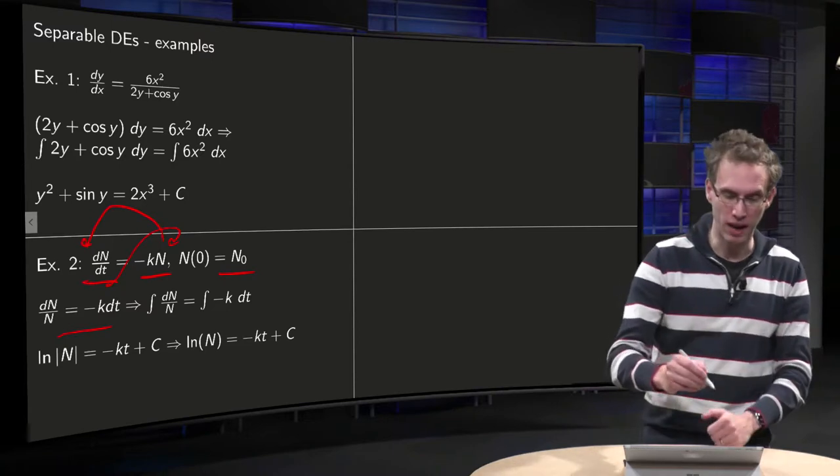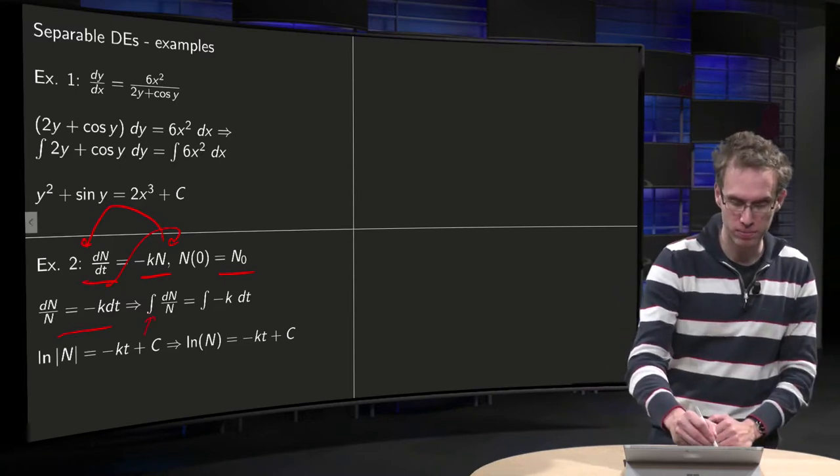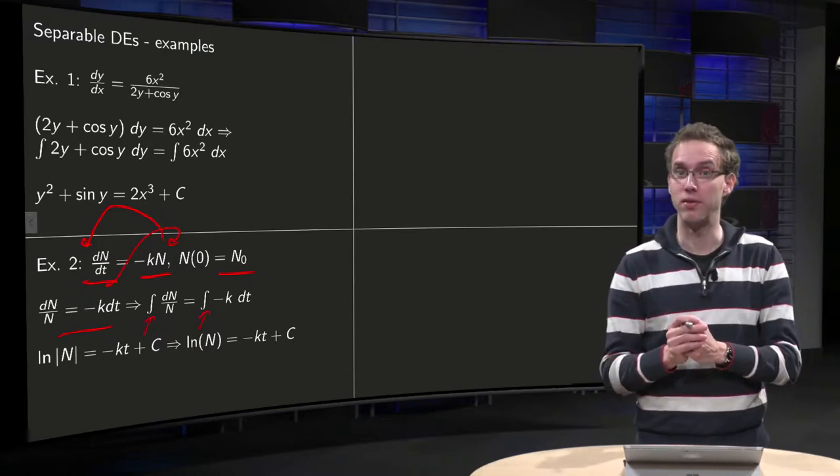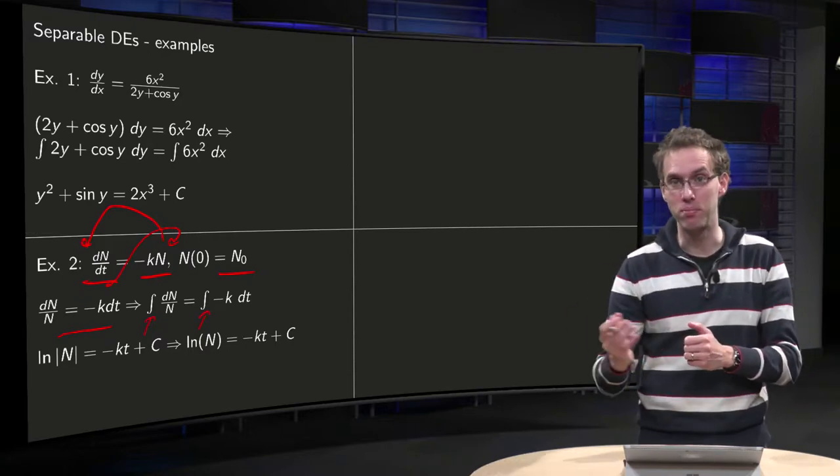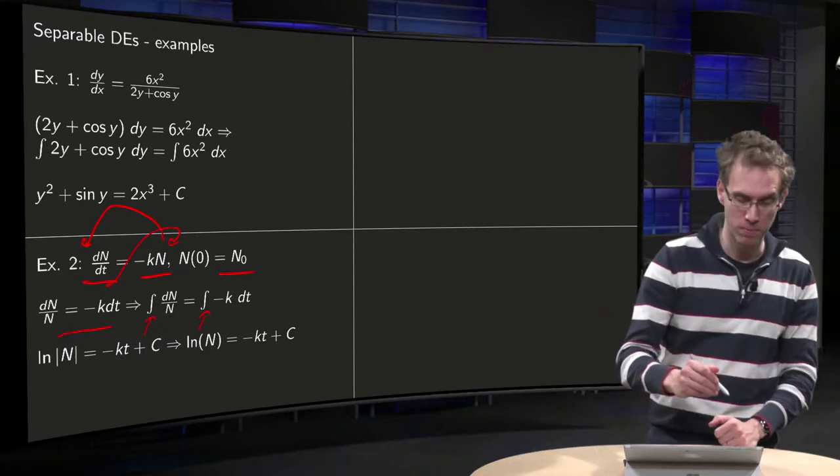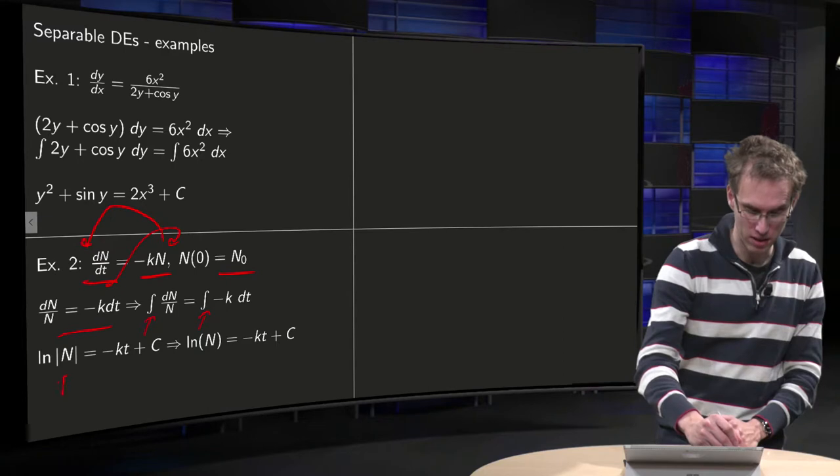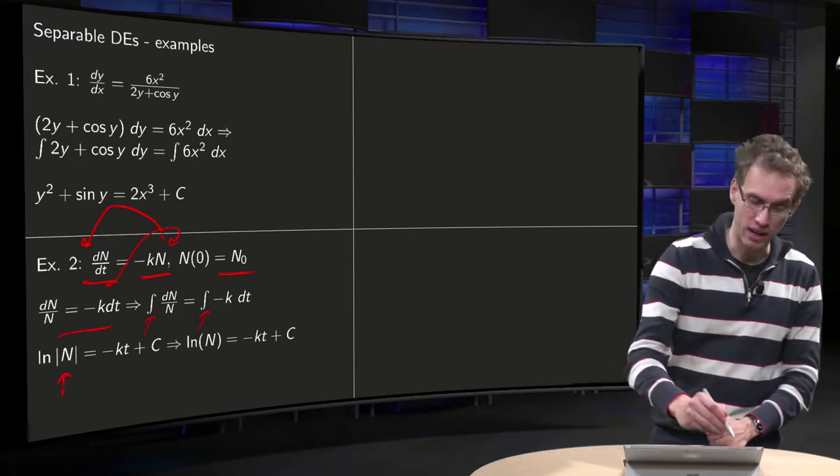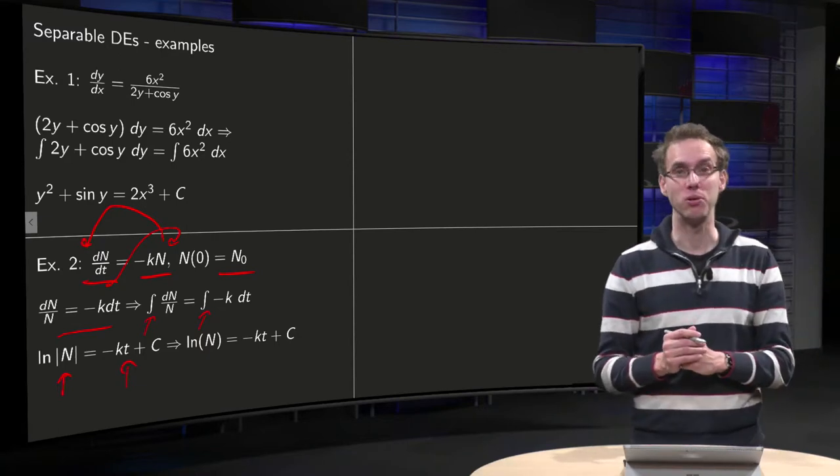Now, how to proceed? We add the integral signs, and we see that we have to integrate 1 over n with respect to n, and we have to integrate minus k with respect to t, where k is a constant. So on the left-hand side, we get the logarithm of the absolute value of n, and on the right-hand side, we get minus kt plus an integration constant.